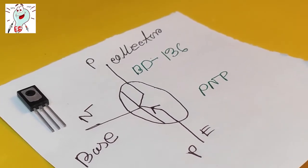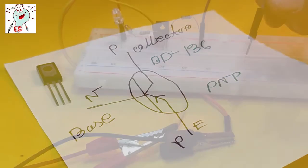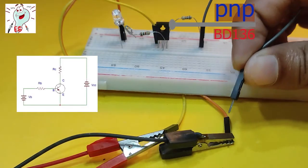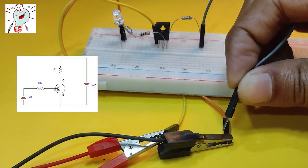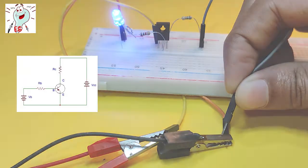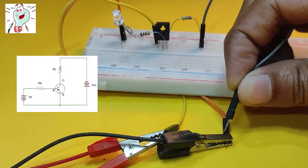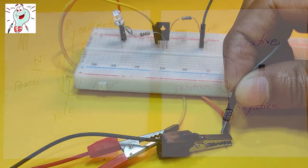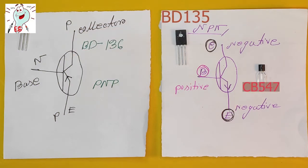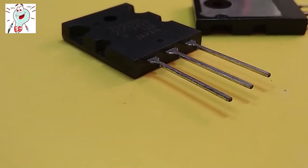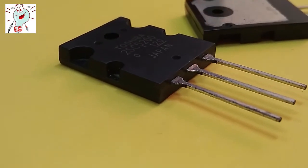If we use a PNP transistor, we have to connect the base pin with ground polarity or negative polarity. And if we use an NPN transistor, we have to connect the base pin with positive polarity to the power supply. Each and every BJT has a tolerance level of voltage and current.